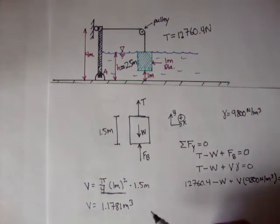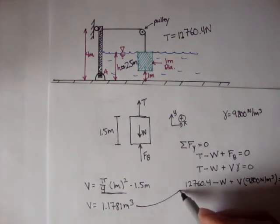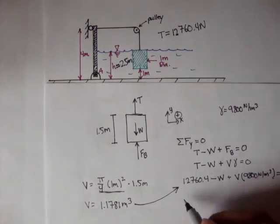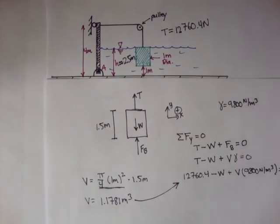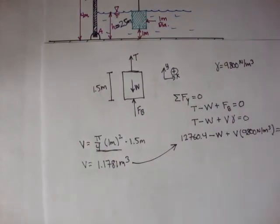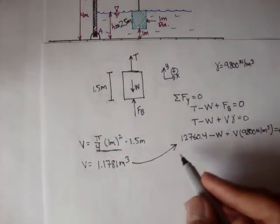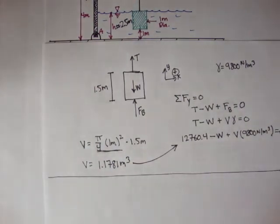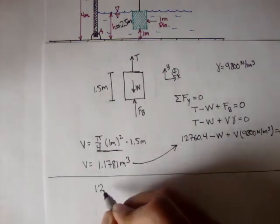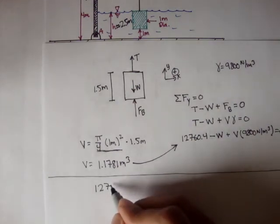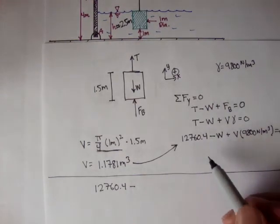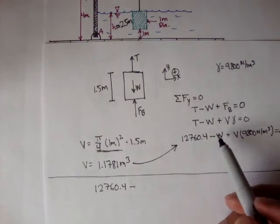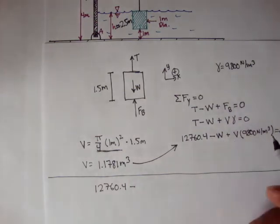And if we plug this back into this equation, let's rewrite this equation a little bit. Adjust my papers here, I'll move the diagram up there. We can say, let me rewrite this formula. We'll have 12,760.4 minus weight, and weight is equal to the weight of the block. Weight is equal to mass times gravity.